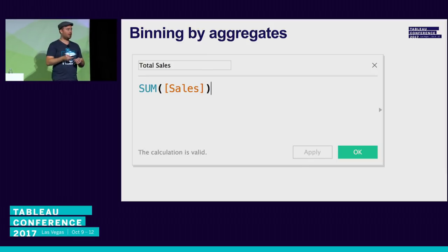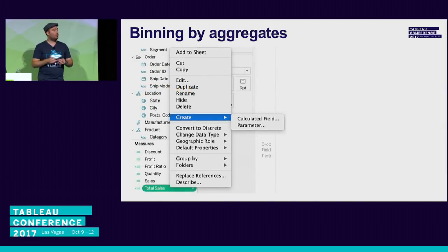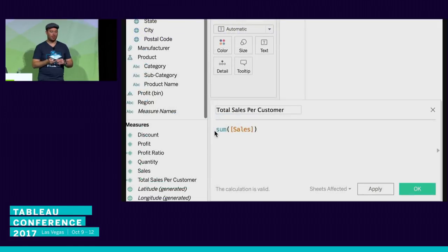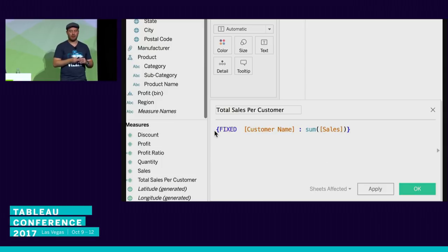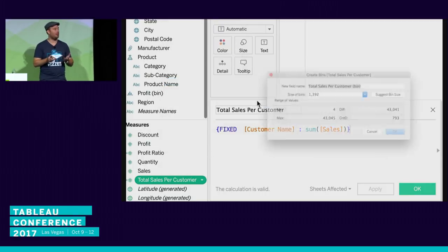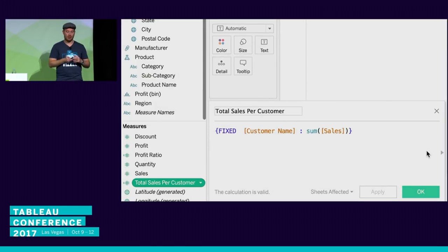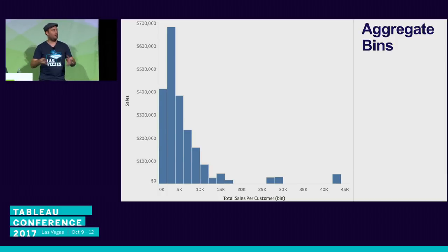Similarly, if you want to bin by aggregates and write an aggregate like sum of sales, there's no binning option in the context menu. The workaround is to make it a fixed LOD — for example, FIXED [Customer Name]: SUM(Sales). Now right-clicking shows both 'convert to dimension' and 'create bins.' Creating bins lets you build a histogram showing how spending varies between customers — many customers who don't spend much, but some spending almost $45,000.